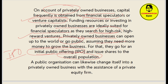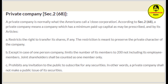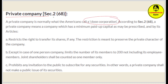A public organization can likewise change itself into a private owned business with the assistance of a private equity firm. By U.S. law, a private company is normally what Americans call a close operation. According to Section 268, a private company means a company which has a minimum paid-up capital as may be prescribed by its articles.